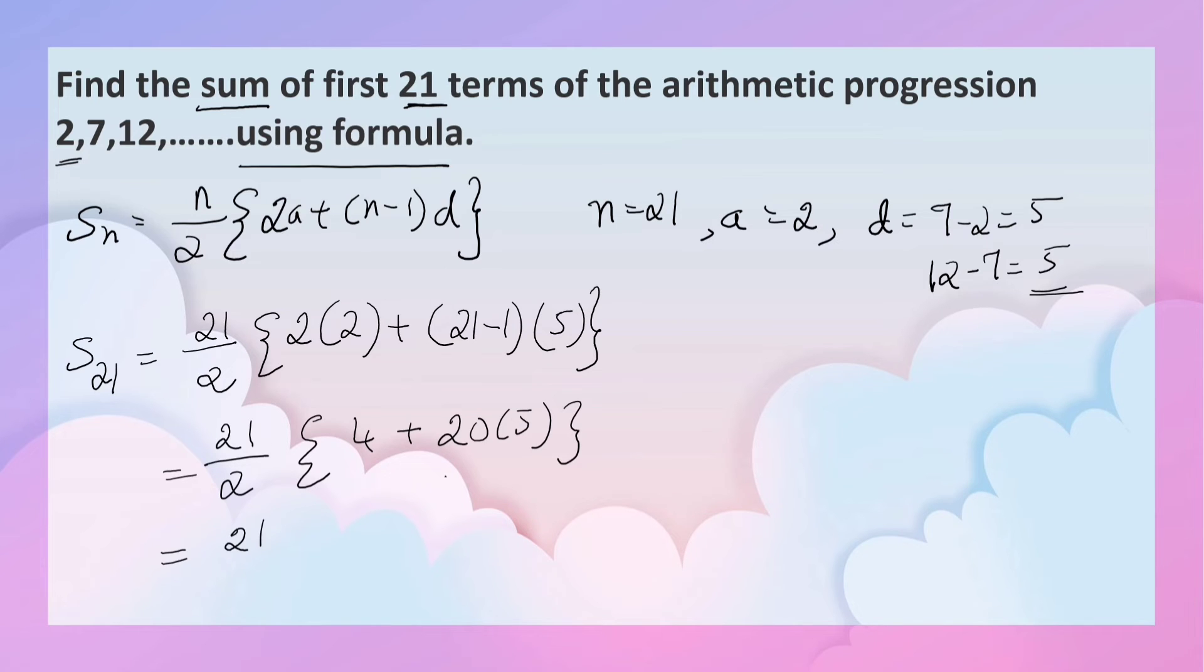That is equal to 21 by 2, 4 plus 20 into 5. What is it? 100.